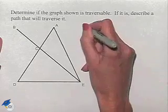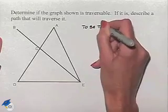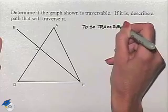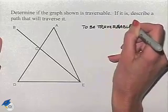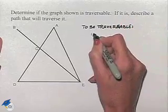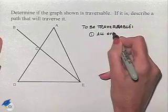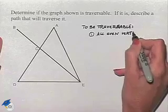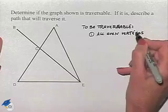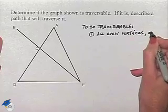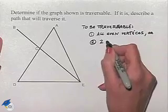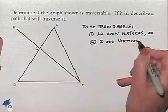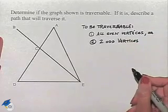Well, to be traversable, we have the following criteria. We could have one, all even vertices. Or we could have two, two odd vertices. It's not traversable if there are more than two odd vertices.